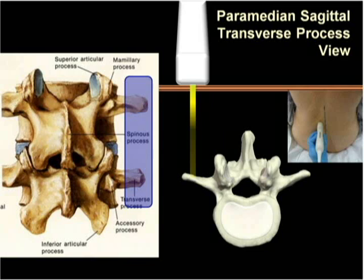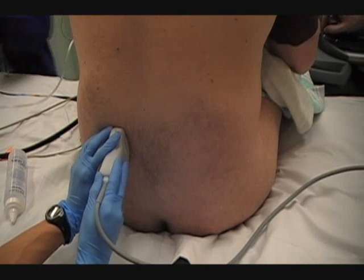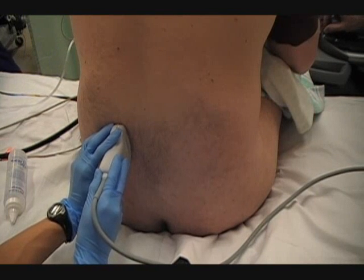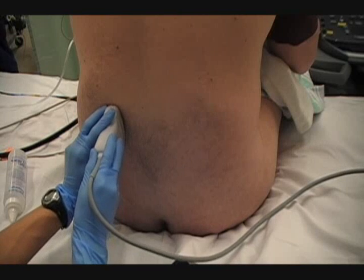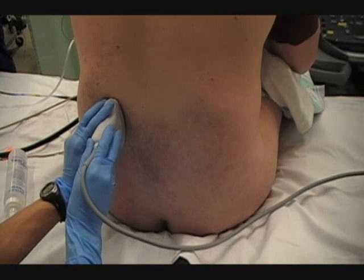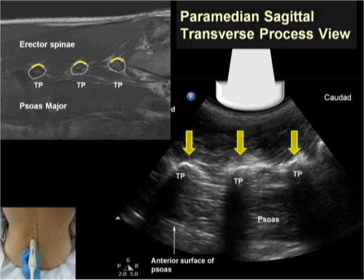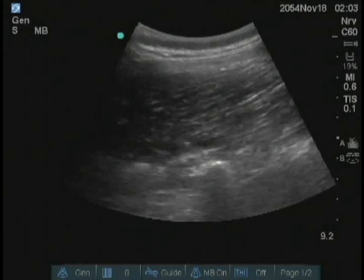It is possible to go straight to acquiring the sagittal oblique view, but less experienced operators may find it easier to start by placing the probe just above the sacrum and lateral to the midline to acquire an image of the transverse processes. The transverse processes cast acoustic shadows over the psoas major muscle that resembles the fingers of a hand or the prongs of a trident.